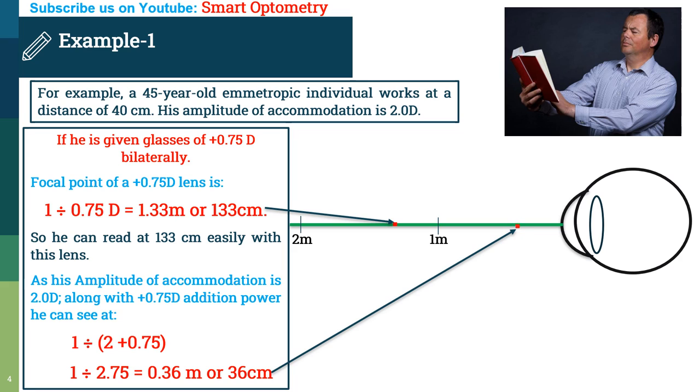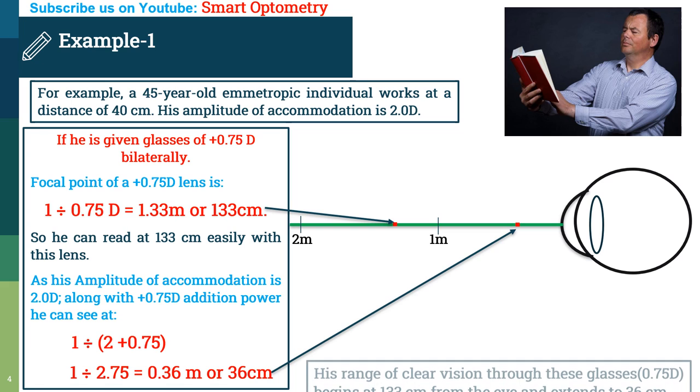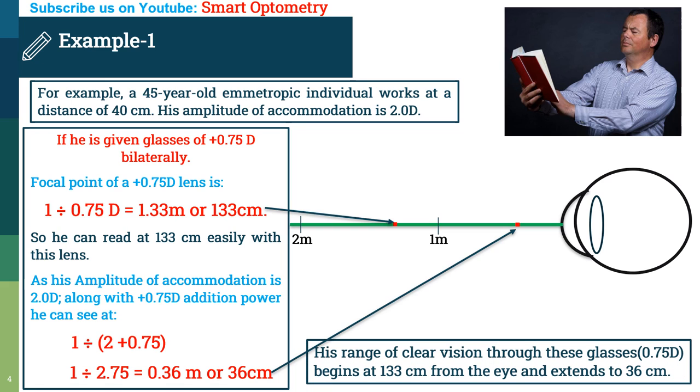So, using his amplitude of accommodation along with addition lens, he can see at a distance of 36 cm. His range of clear vision through these glasses begins at 133 cm from the eye and extends to 36 cm. So, his range of near working distance or reading distance is 97 cm, in which he can see clearly.